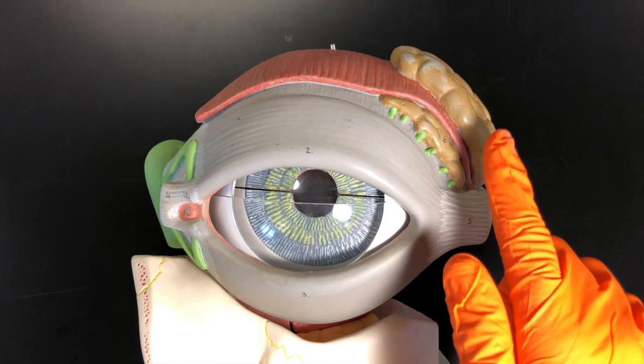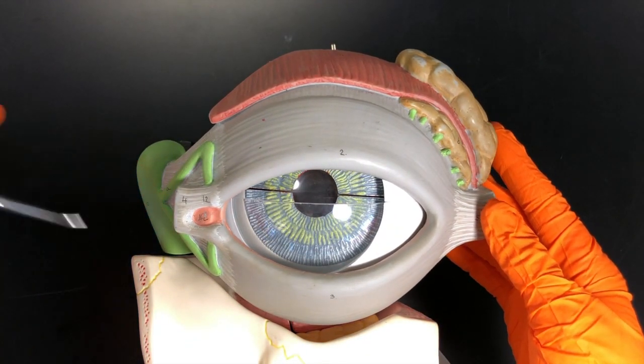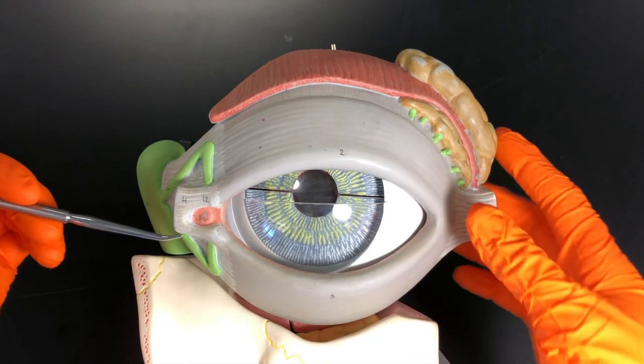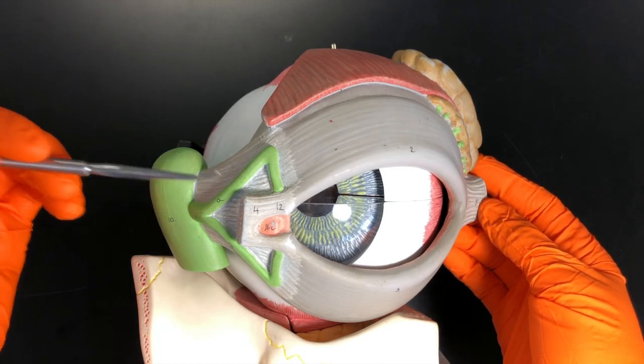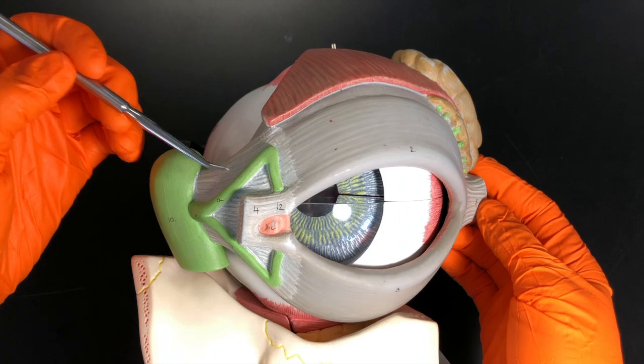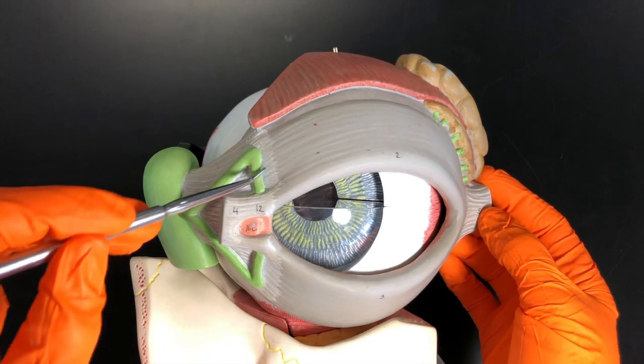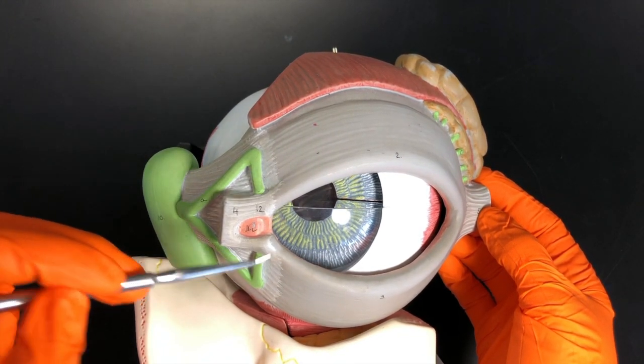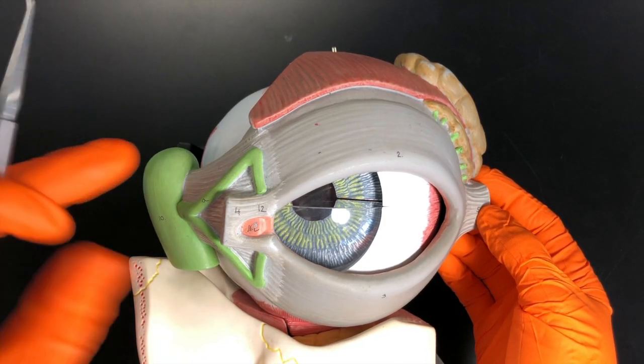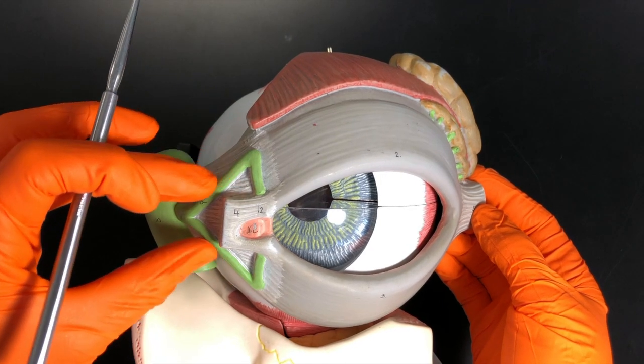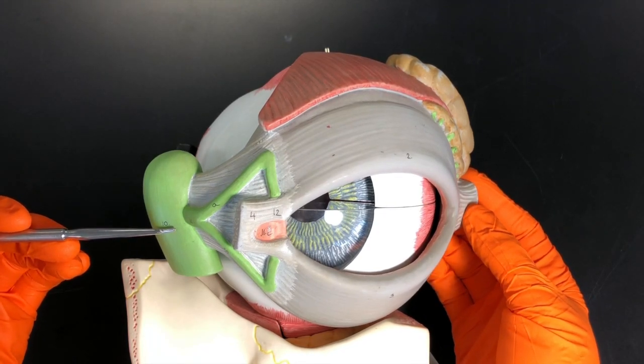The lacrimal gland is on the lateral side of the eye. Then medially here, we have two passageways called canaliculi. This is the superior canaliculus, and this is the inferior canaliculus. These two structures right here are technically called puncta, and those will drain into the canaliculi, which connect into the lacrimal sac.